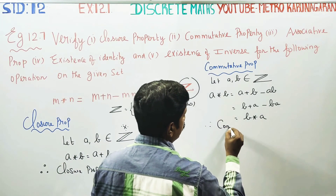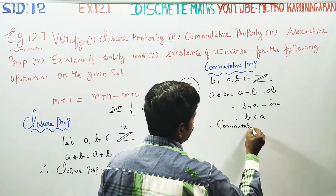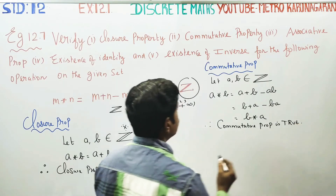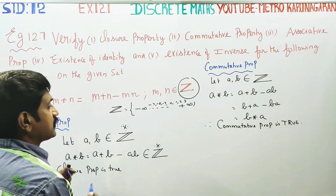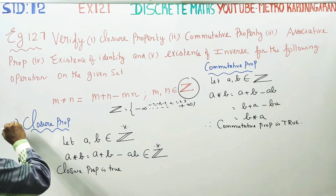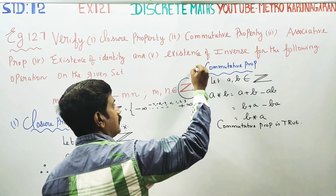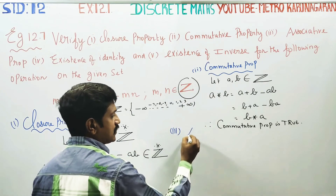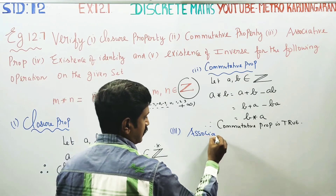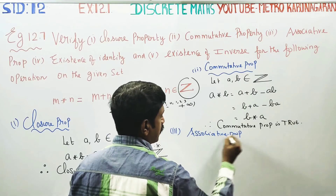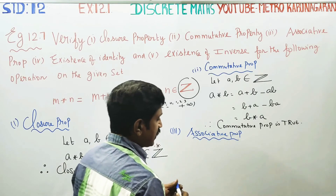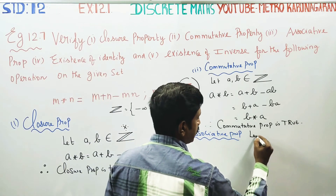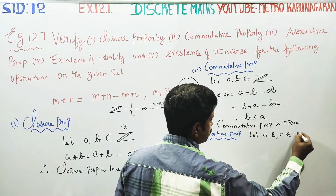Therefore, commutative property is true. After finishing commutative property, the third one is associative property. For associative property, we need to take three elements at a time. Let a, b, c belong to integers.